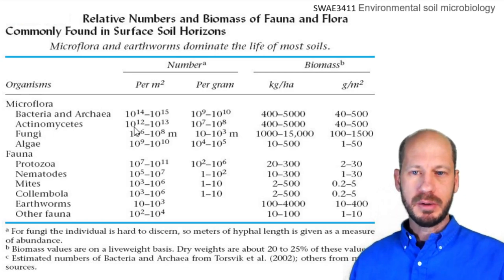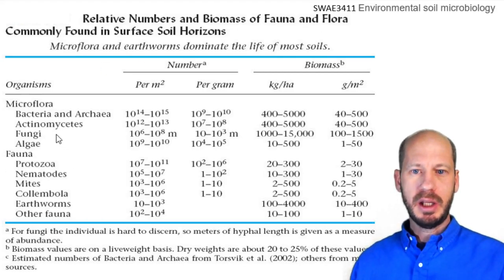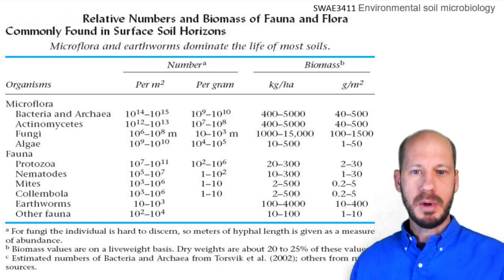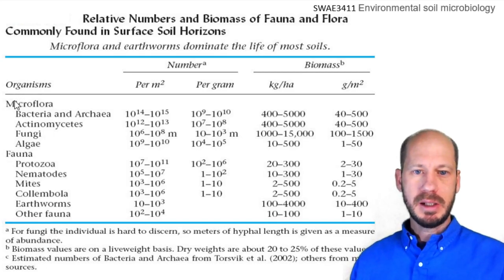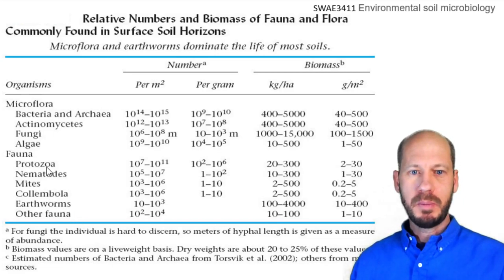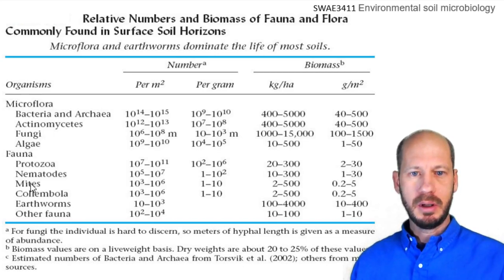Overall we come back to the same things: these classifications of soil organisms by size. We have the microflora consisting of bacteria, archaea, actinomycetes, fungi and algae. And we have the fauna consisting of protozoa, nematodes, mites, collembola, earthworms and other macrofauna. The majority of the biomass in soils in general will correspond to bacteria, unless in certain special cases where fungi will take over, especially in forest ecosystems with a lot of mycorrhizal association. But overall in agricultural soils you expect that bacteria will account for the majority of cells and also for the majority of the biomass in grams per kilogram.